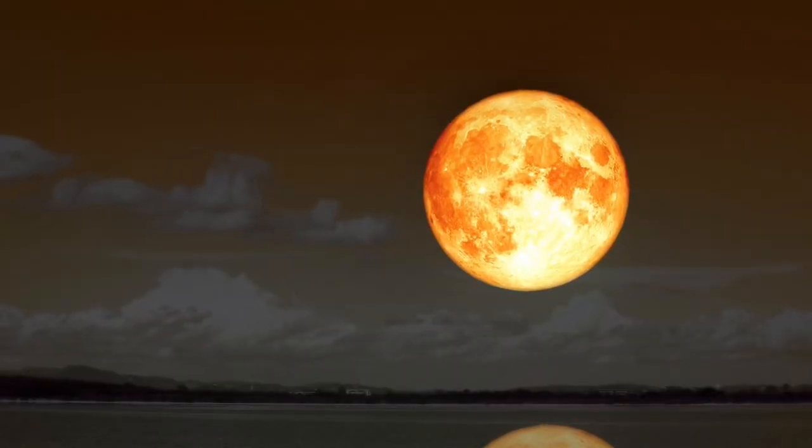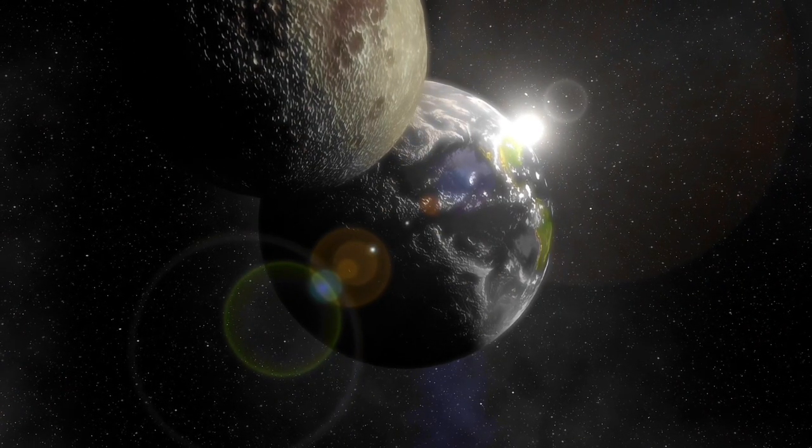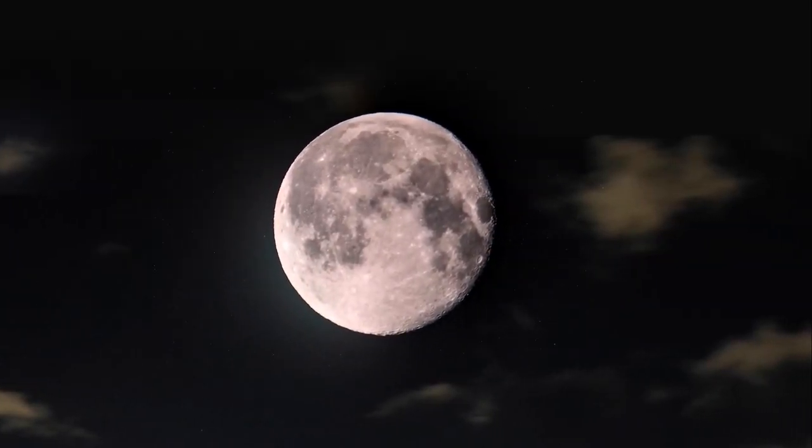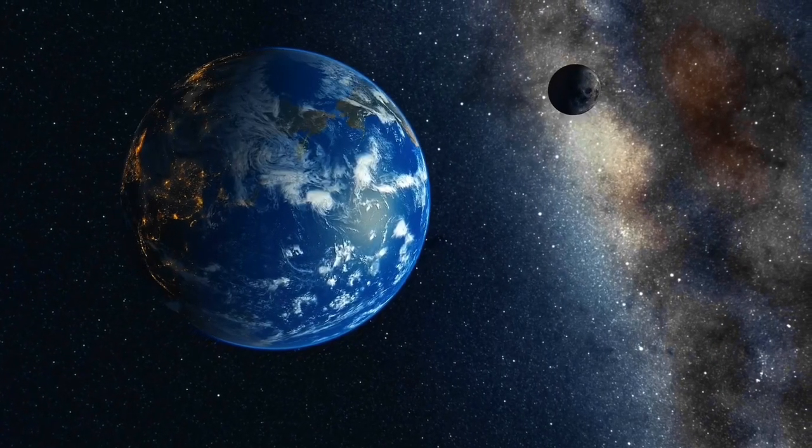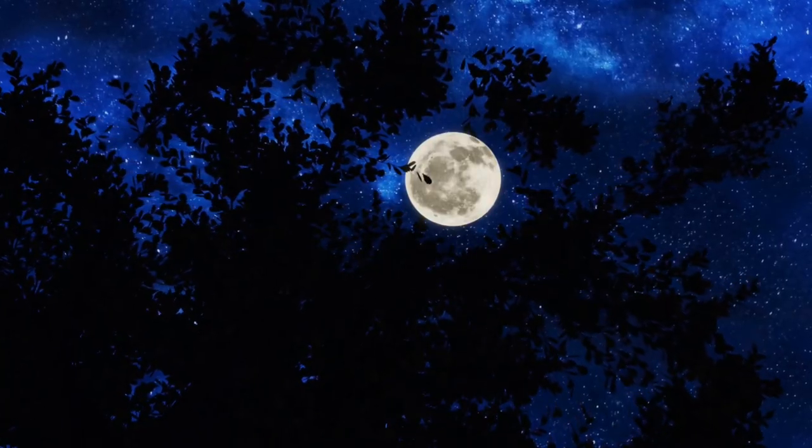On August 1st is the first of the two supermoons in the year 2023. Our natural satellite will be in the constellation Capricornus. The prefix super means that the full moon will closely coincide with our natural satellite's closest approach to the Earth, so it seems larger than normal.